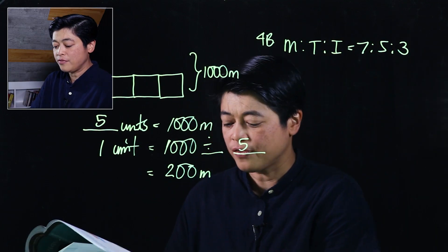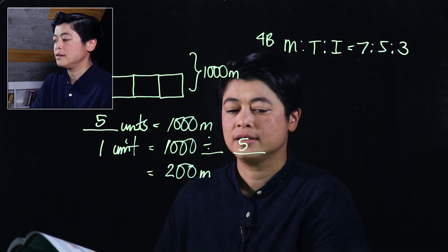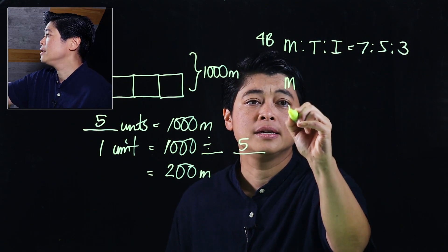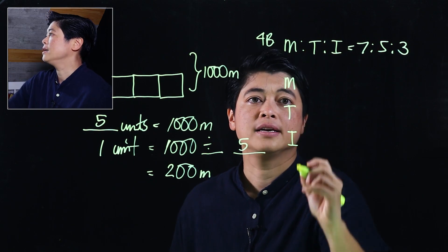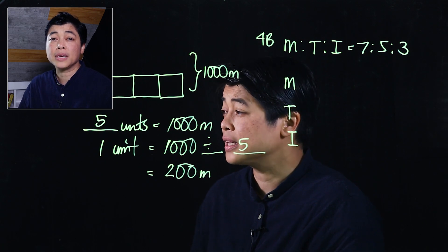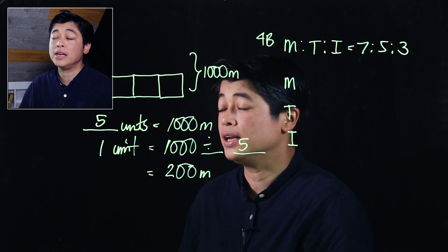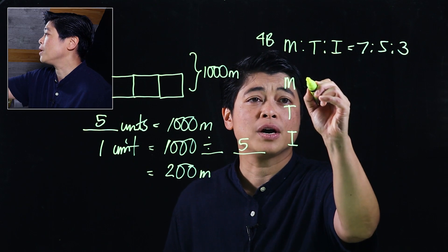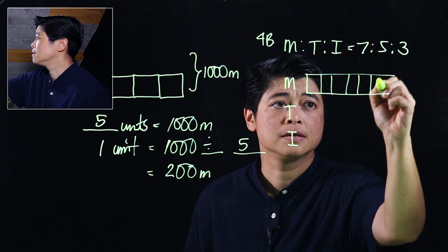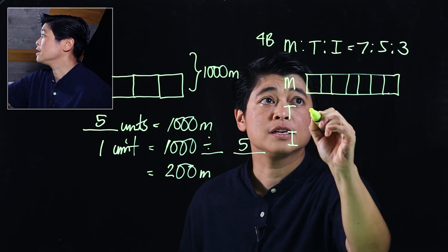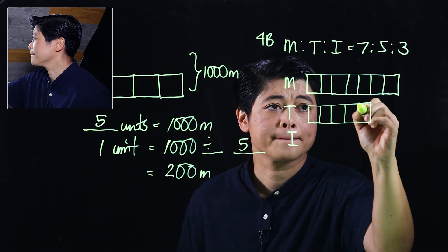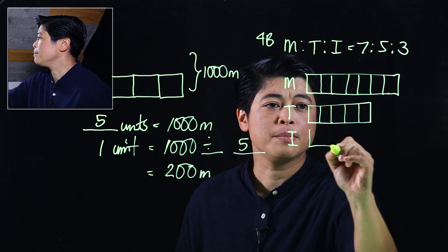He had 45 stamps from Thailand. We'll do a bar model for this: M, T, and I. If you can do it without the bar model fine, but if you can't, the bar model really will be helpful. So this will be 7 boxes, this will be 5 boxes, and this will be 3 boxes.